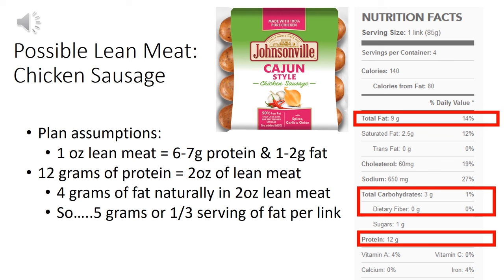Looking at the nutritional facts for this particular sausage, since we're asking if this is a protein, the first thing we pay attention to is grams of protein. One sausage link has 12 grams of protein, which is basically two ounces of lean meat. That tells us for two ounces of lean meat we can have about four grams of fat. However, these sausages have nine grams of fat, so four grams naturally occur in the product — that's fine. The other five grams will be considered part of your healthy fats, or basically one third of a serving of fat per link.